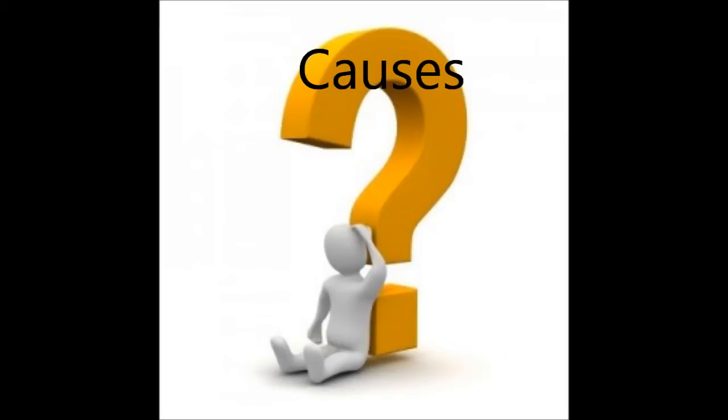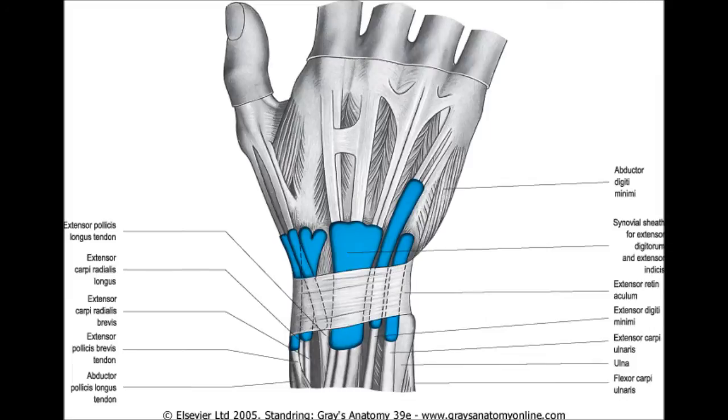It can happen to any tendon sheath in the body but is common in the wrist, hands, feet, and ankles. The wrist flexors are on the palm side of the wrist, and for overuse can be caused by repetitive gripping, typing, lifting, etc.